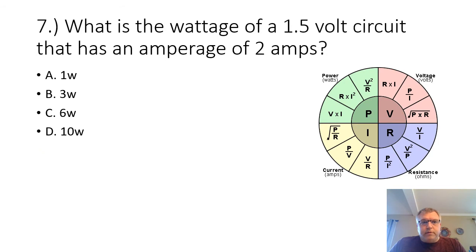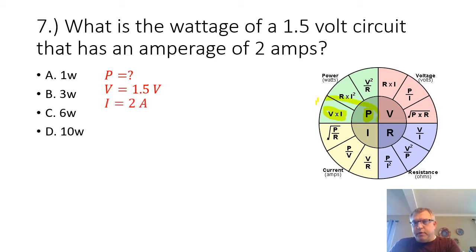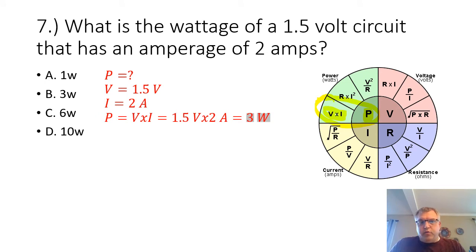Problem seven: what is the wattage of a 1.5-volt circuit that has an amperage of 2 amps? We are looking for the power. We are given the voltage of 1.5 volts and the current of 2 amps. Our formula is P equals V times I. 1.5 volts times 2 amps equals 3 watts.